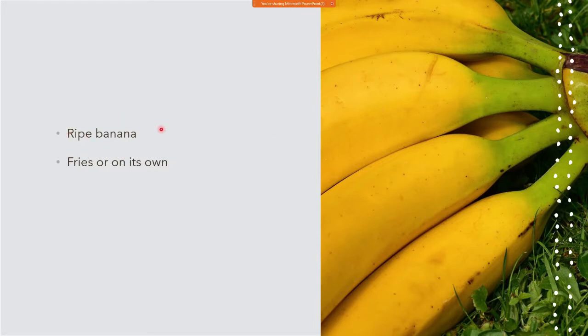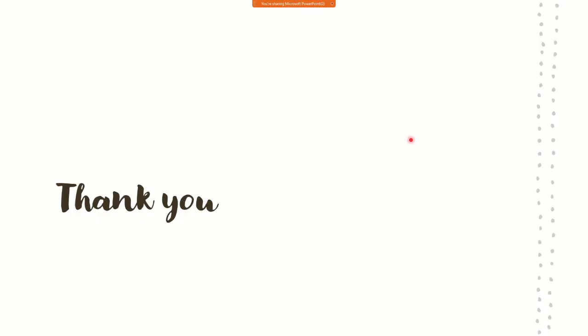Here is a very delicious nasi lemak — you can see eggs, anchovies, cucumber, chicken, fried peanuts, fragrant rice, and sambal on top. This is how nasi lemak wrapped in banana leaves looks like. Apart from that, you can also eat banana fruits — fried or on their own. It tastes very nice and sweet. Thank you, hope to see you again, goodbye.